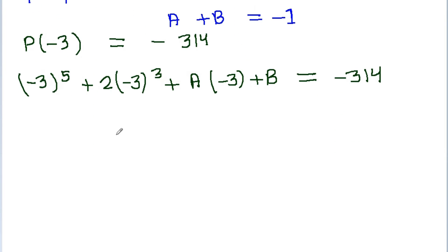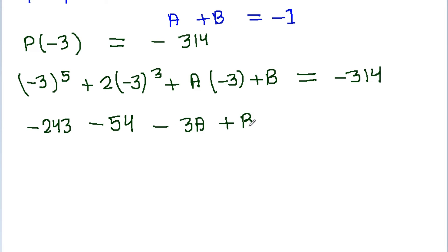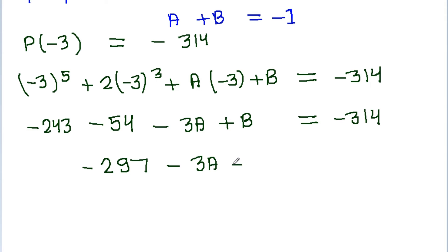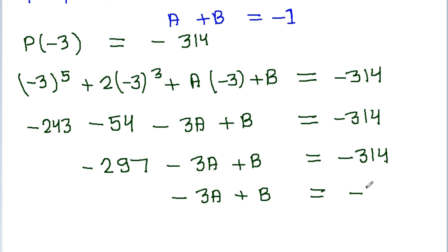And now we get minus 243 minus 54 minus 3a plus b is equal to minus 314, which gives minus 297 minus 3a plus b is equal to minus 314. So minus 3a plus b is equal to minus 17, or 3a minus b is equal to 17.